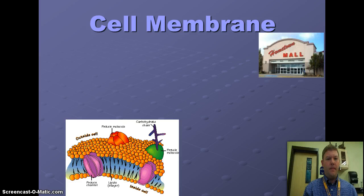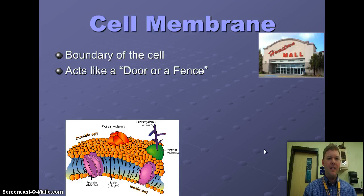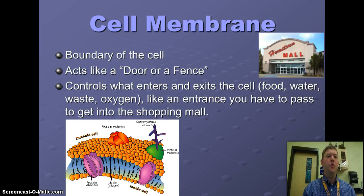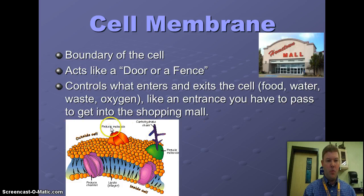So what's the cell membrane? Think of the cell membrane as the boundary of the cell. It acts like a door or a fence and it controls what enters and exits the cell. Food, water, waste, and oxygen are constantly entering and exiting the cell. It's like the entrance to a mall that you have to pass through to get in.